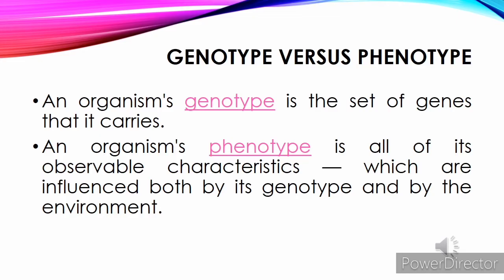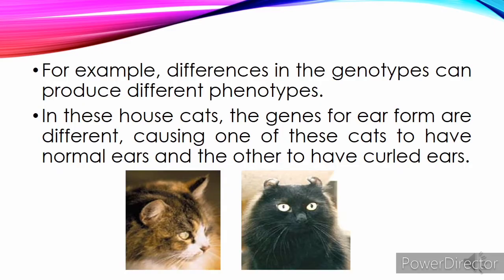Genotype vs. Phenotype: An organism's genotype is the set of genes that it carries. An organism's phenotype is all of its observable characteristics, which are influenced both by its genotype and by the environment. For example, differences in the genotypes can produce different phenotypes. In these house cats, the genes for ear form are different, causing one cat to have normal ears and the other to have curled ears.